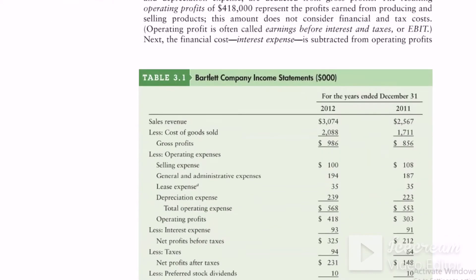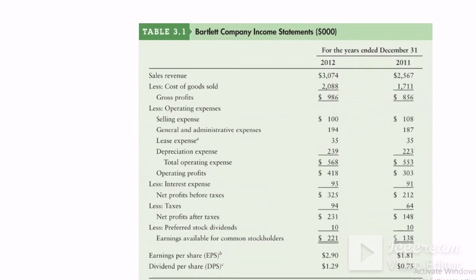The income statement structure is as follows: sales revenue, less cost of goods sold, equals gross profit, less operating expenses — which include selling expenses, general and administrative expenses, lease expenses, and depreciation expenses — gives total operating expenses. Gross profit minus total operating expenses gives operating profit, or EBIT. EBIT is calculated as: sales revenue, less cost of goods sold, equals gross profit, minus operating expenses, equals operating profit or EBIT.